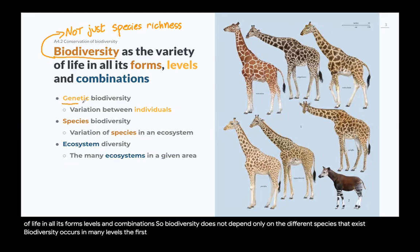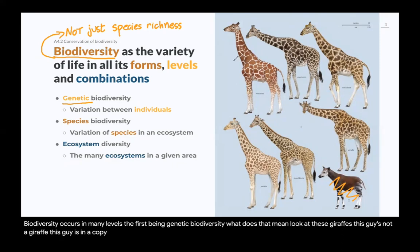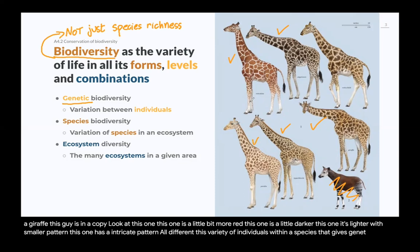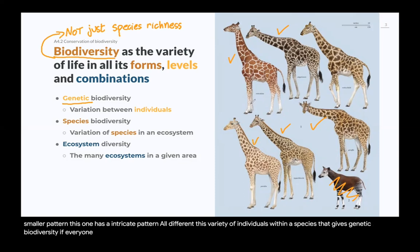The first being genetic biodiversity. Look at these giraffes — this one is a little bit more red, this one is a little darker, this one is lighter with a smaller pattern, this one has an intricate pattern. They are all different. This variety of individuals within a species gives genetic biodiversity. If everyone is the same, everyone is a clone, then there's no biodiversity in that sense.